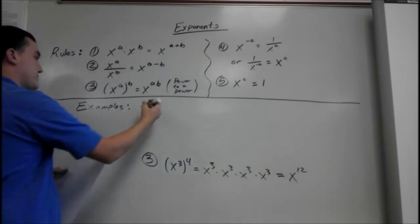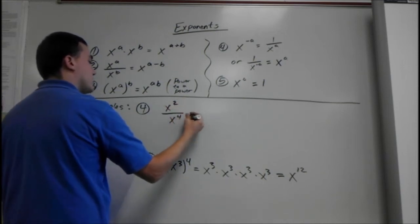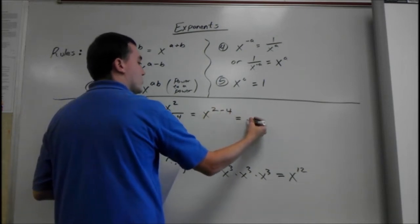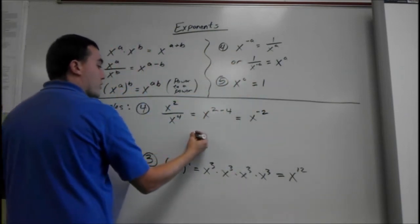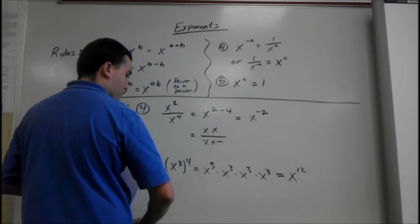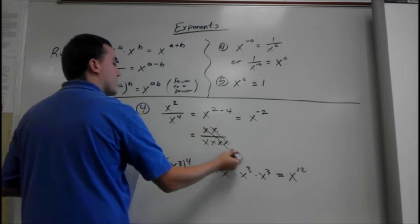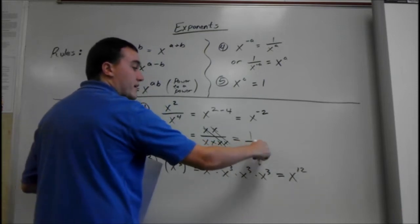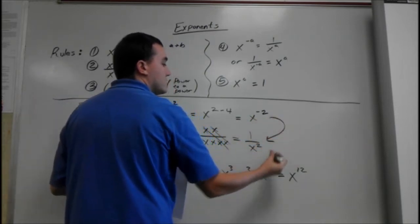Say we have x squared over x to the fourth. That gives us x to the 2 minus 4, which would be x to the negative 2. But we flip it for a specific reason — another way of writing this is x times x over x times x times x times x. Two cancel out and we're left with two on the bottom. In math, it's more acceptable to have positive exponents, so we prefer to write it that way.